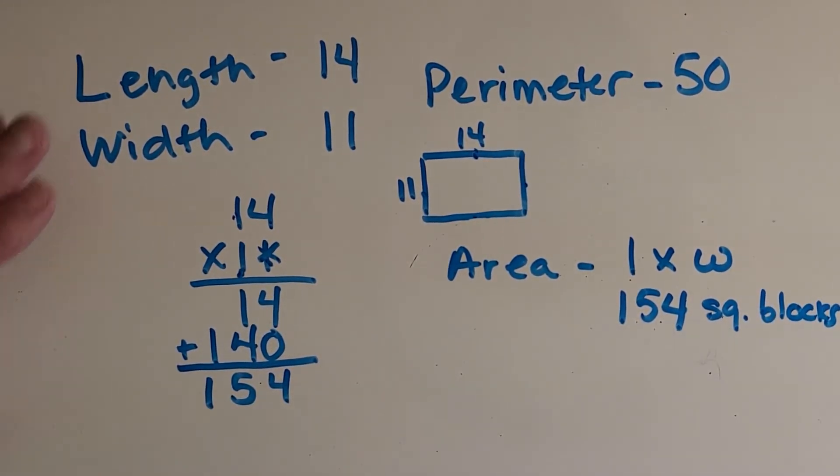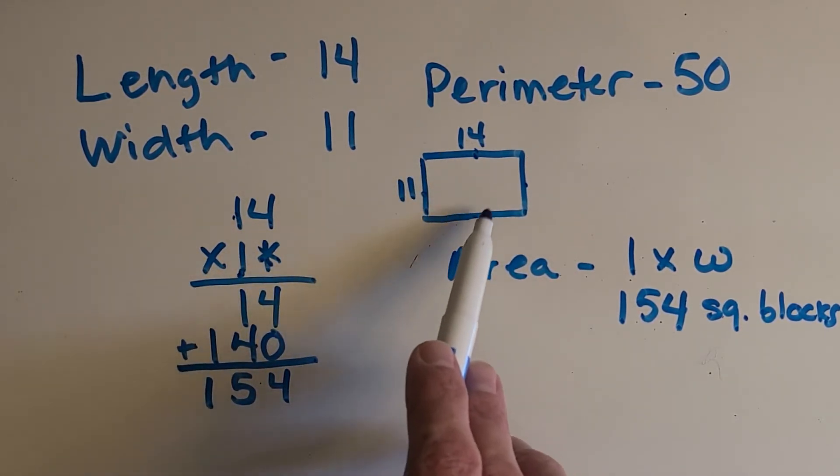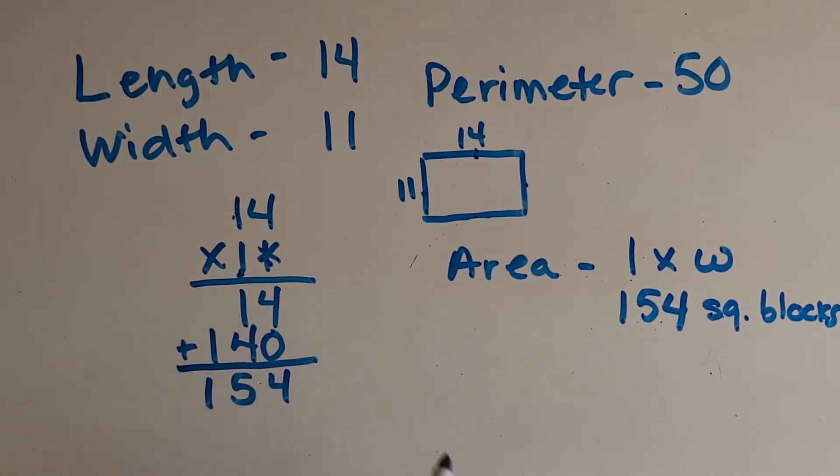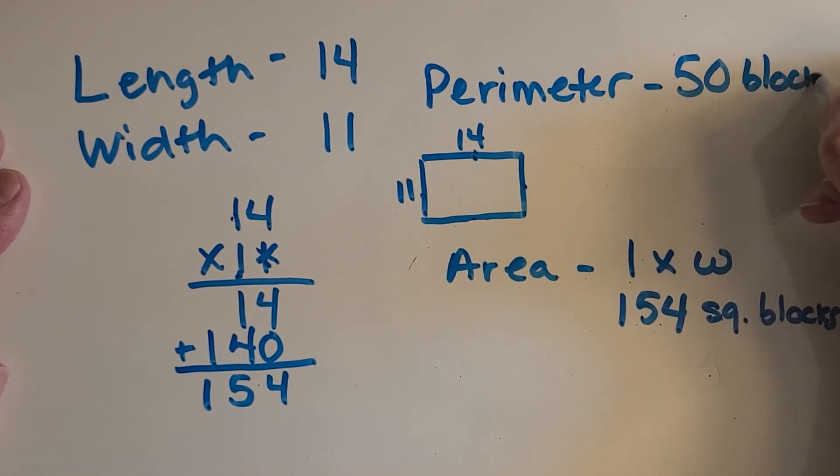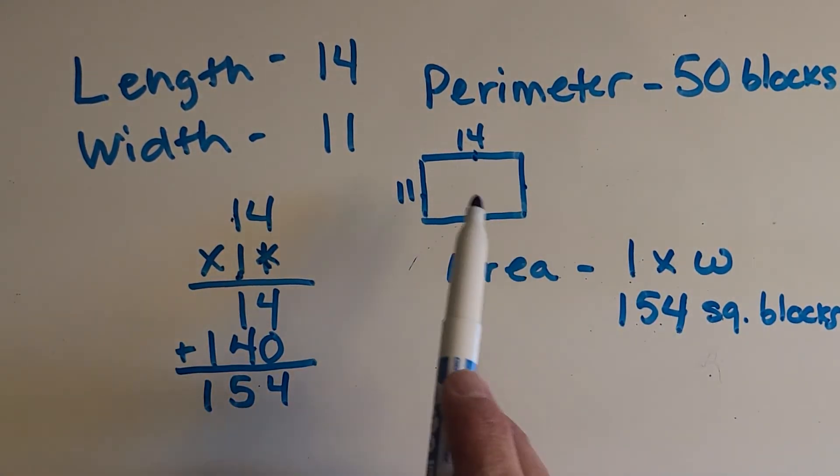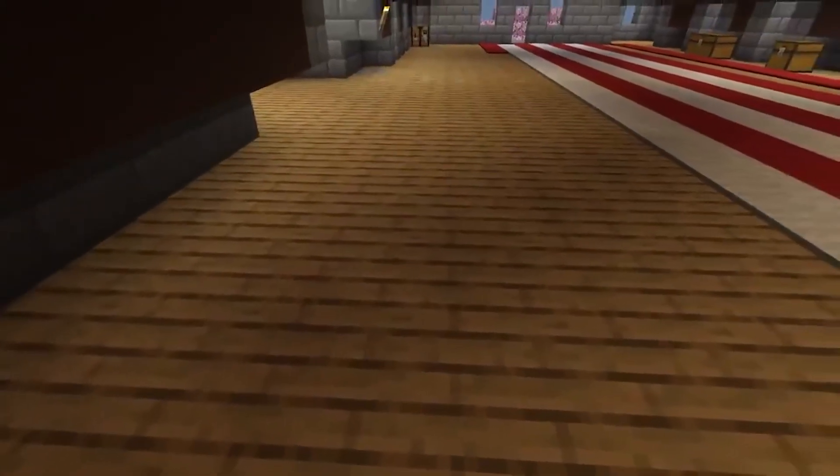All right. So our area is 154 square blocks. Okay. And I always say something like that when I do area. Yeah, sometimes it's, you know, you're working with inches or centimeters or feet. In this case, we're just working with blocks. And so I write square to show you that we're actually counting. If you can imagine there being squares in here, there would be 154 squares inside. Okay. When we're doing perimeter, it's just 50 blocks long. Okay. We didn't count the squares. We just counted the distance of the outside of the shape. All right. Great work.